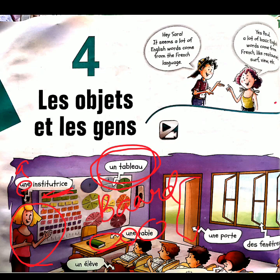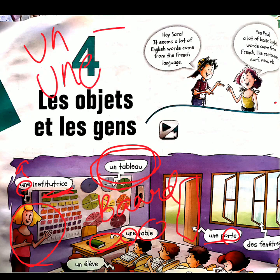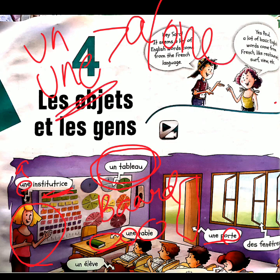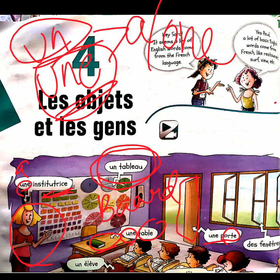And door — how do you say door in French? 'Une porte.' Porte means door. Students, 'un' and 'une' both mean 'a' or 'one.' I will tell you in the next video where we use 'un' and where we use 'une.'